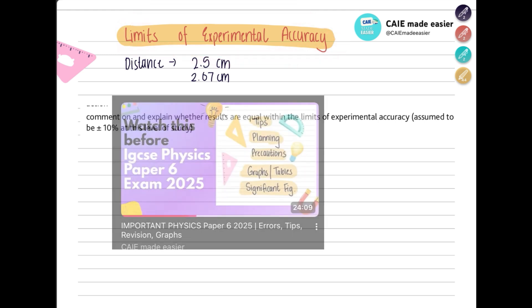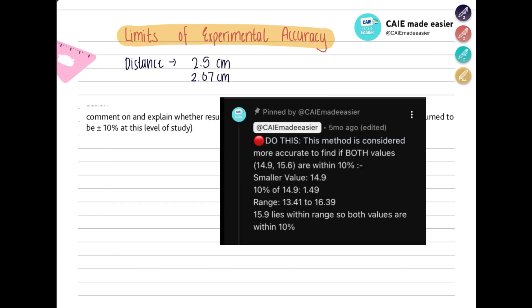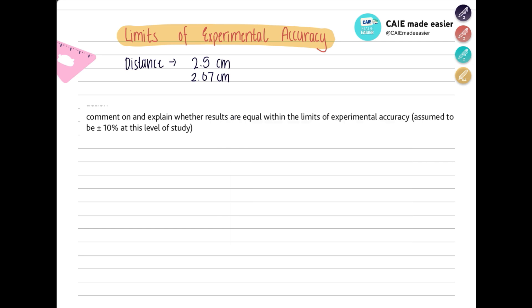Now I also explained this in the previous video. Some people were confused in the previous video. I wrote in my pinned comment that this is how you should do it and people were confused. So here is a very simple and easy way if you want to know two values are within the limits of experimental accuracy.